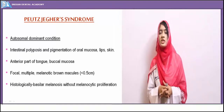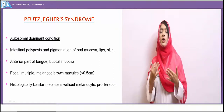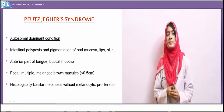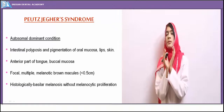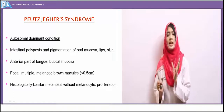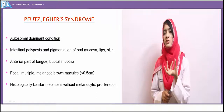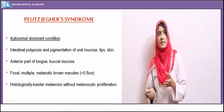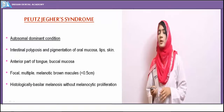Peutz-Jeghers syndrome is an autosomal dominant inherited disorder characterized by association of intestinal hamartomatous polyps. Along with the polyps, there is characteristic pigmentation seen on the skin and oral mucous membrane. The anterior part of the tongue and buccal mucosa clinically appear as restricted, well-circumscribed melanotic brown macules less than 0.5 cm in diameter. Microscopically, basilar melanosis is seen in the basal layers, but melanocyte proliferation is not seen.